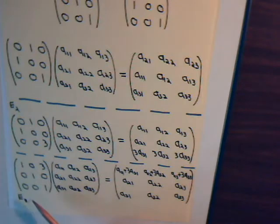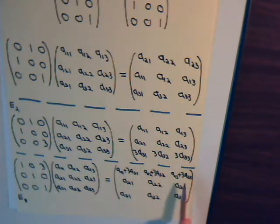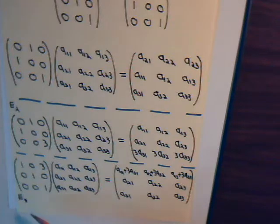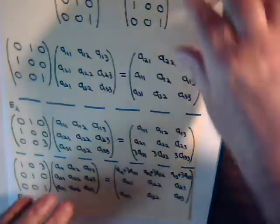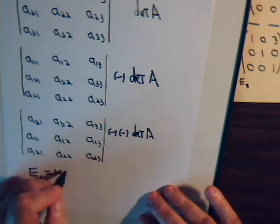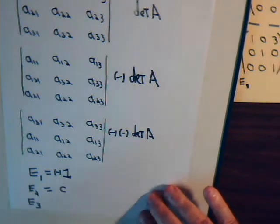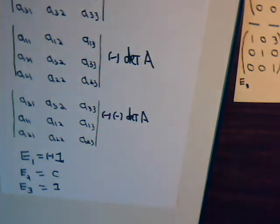Interestingly, for the type-three elementary matrices — where you multiply a row by a constant, in this case three, and add it to another row, in this case the first row — go ahead and check the determinant and you'll find it's one. No matter what type-three elementary matrix you have, no matter what number you multiply the row by or which row you add it to, it always has a determinant of one. So: type-one elementary matrix has determinant negative one, type-two has determinant equal to some constant, and type-three has determinant positive one.